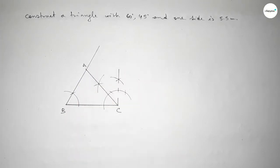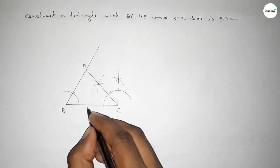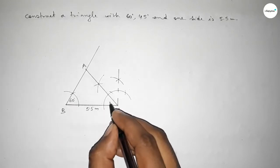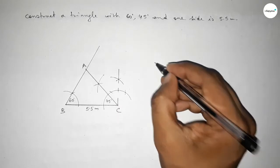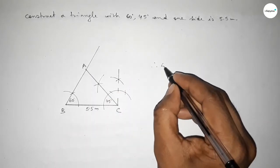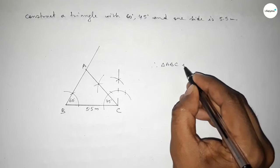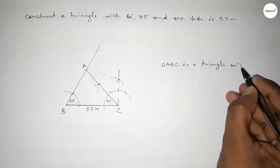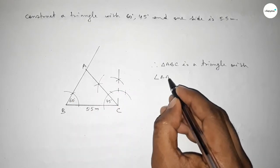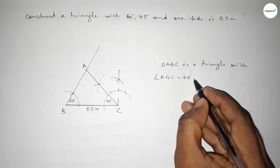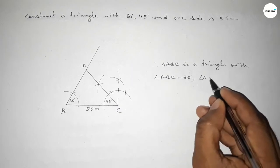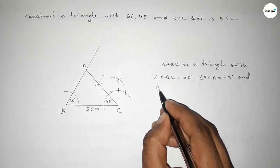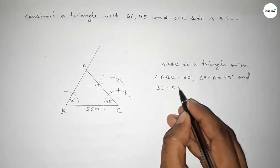The two lines intersect at point A. So this is the 5.5 centimeter line BC, angle ABC equals 60 degrees, and angle ACB equals 45 degrees. Therefore triangle ABC is the required triangle with two given angles and one given side BC equal to 5.5 centimeters.